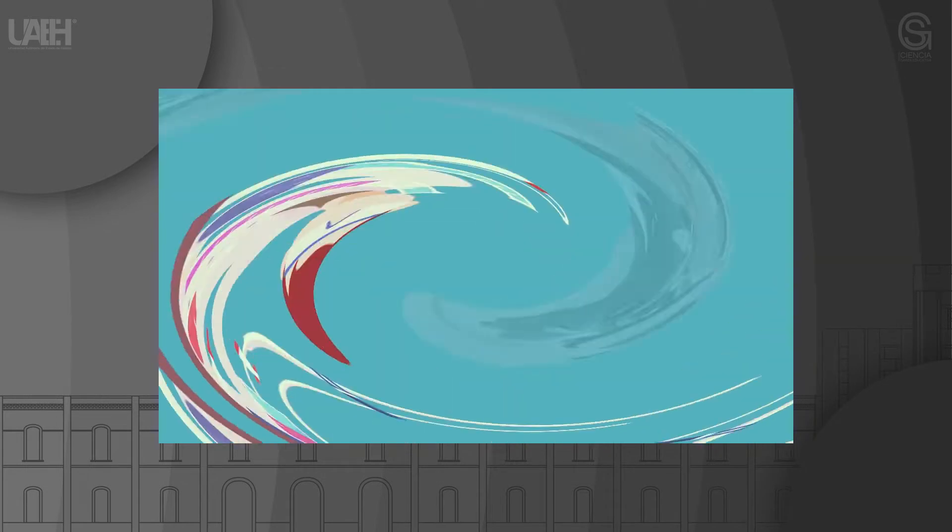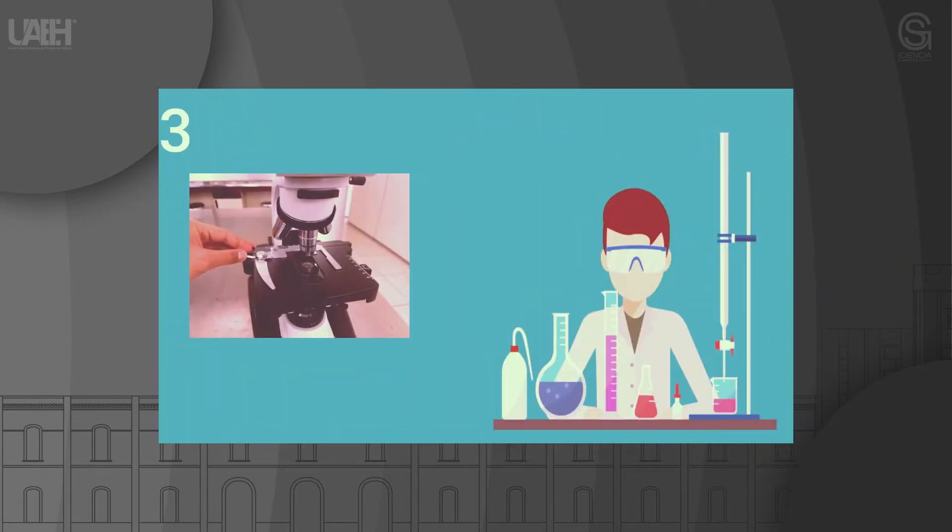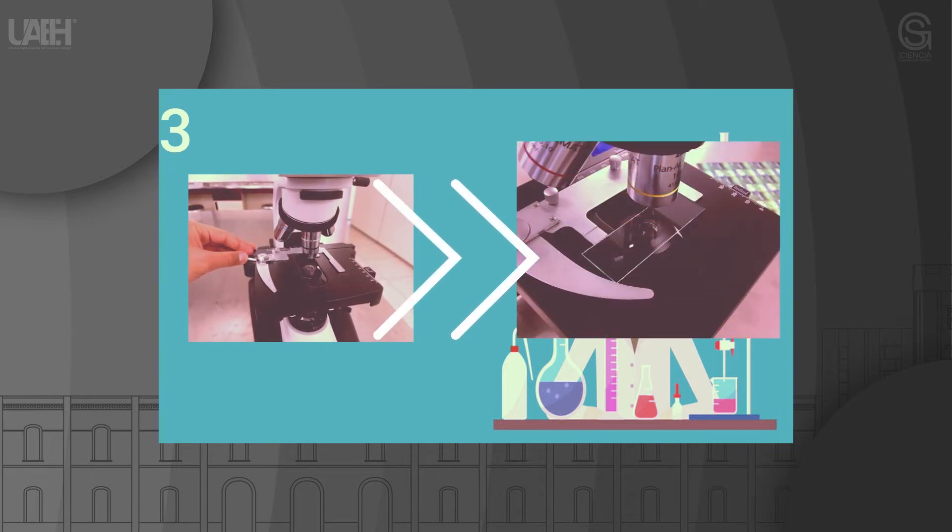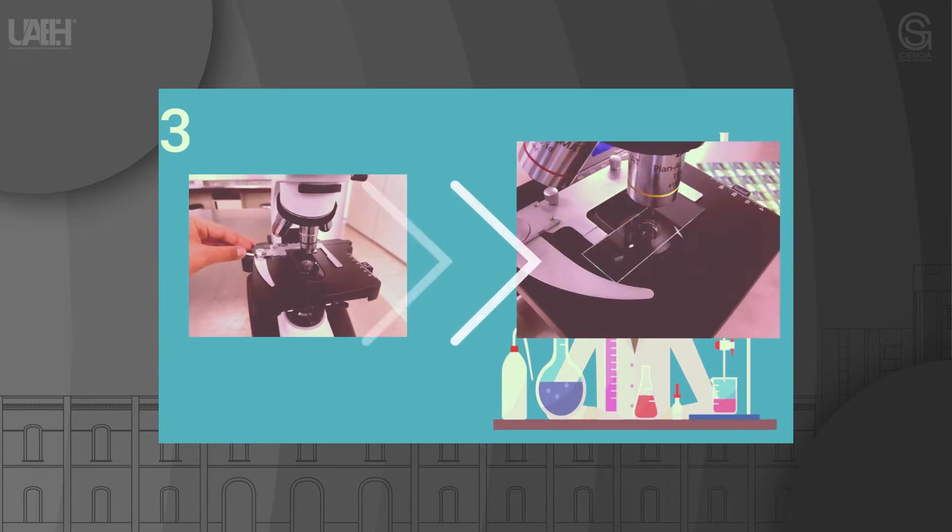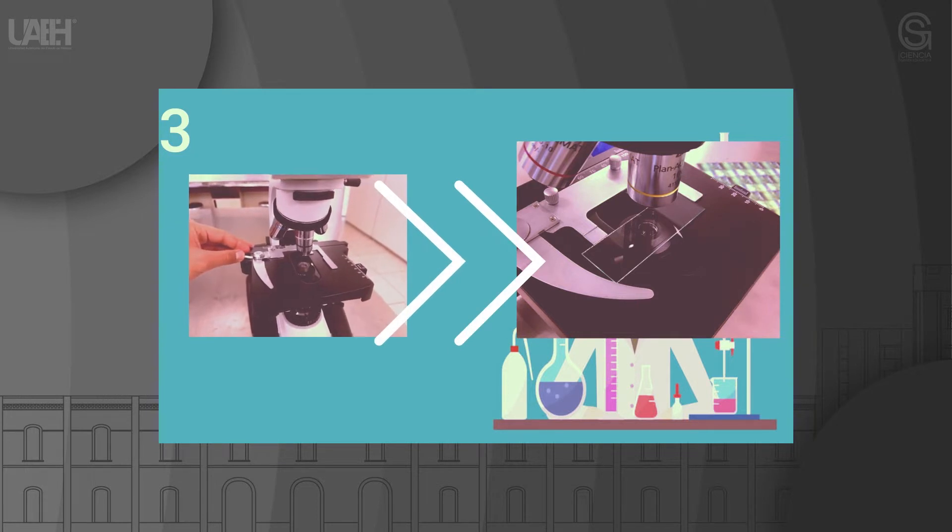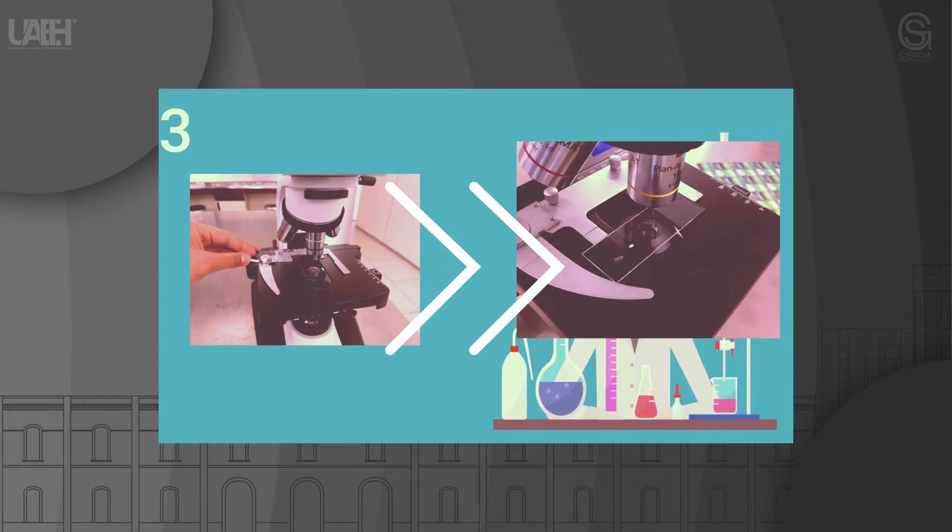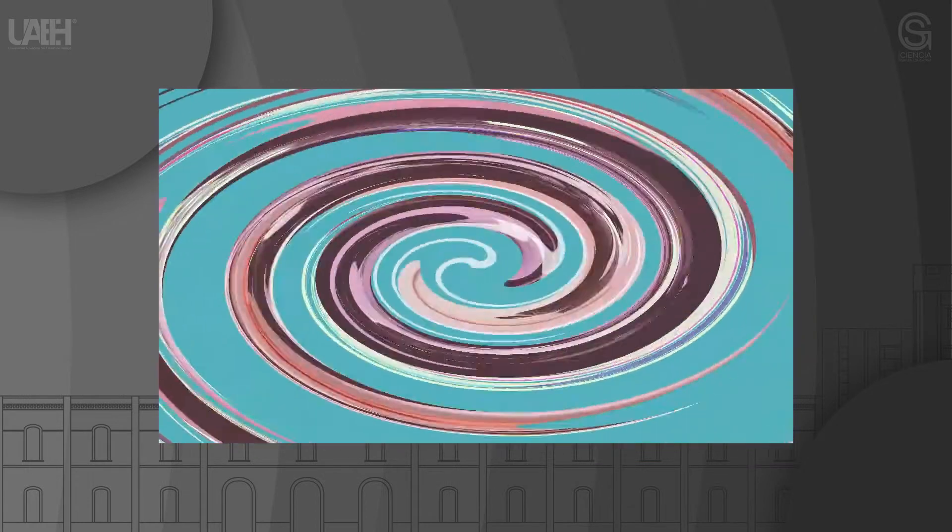Step 3: Place the slide with the sample in the center of the stage. Make sure the sample is approximately over the hole in the stage. A well-prepared sample will be covered with a cover slip to prevent contact between the objective and the sample. You can properly fix the sample using the clamps on the stage.